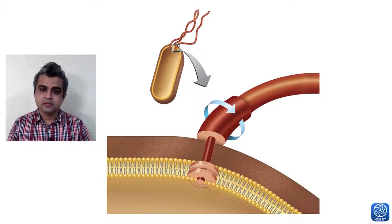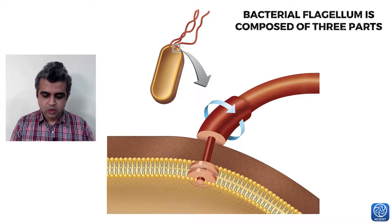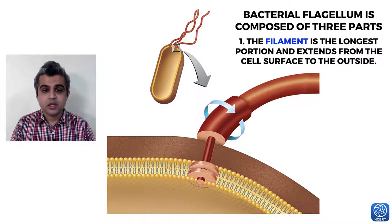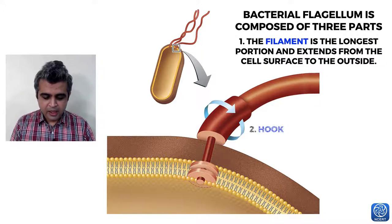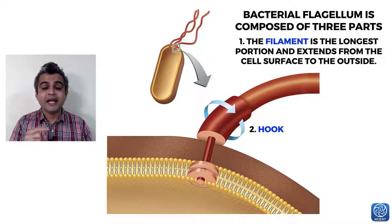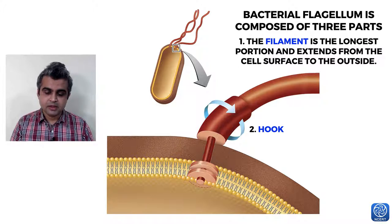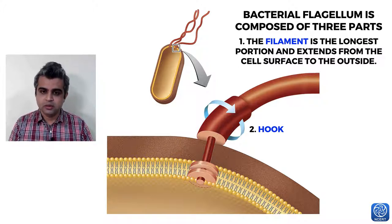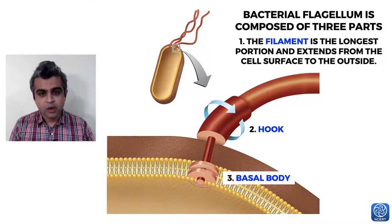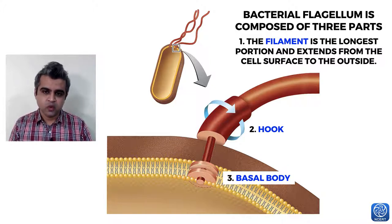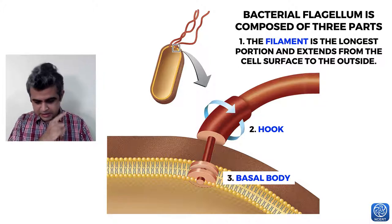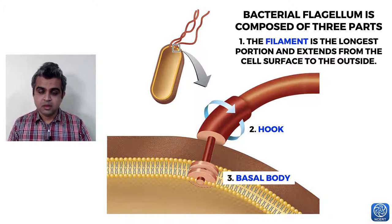The bacterial flagellum is composed of three parts: the filament — the longest portion extending from the cell surface; a hook, which helps in rotatory motion (unlike eukaryotic flagella which have a whip-like motion); and a basal body, which has either two rings in gram-positive bacteria or four rings in gram-negative bacteria.